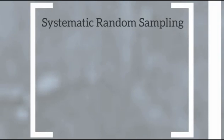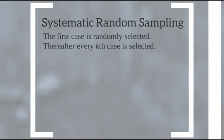Systematic random sampling is slightly different from simple random sampling. It occurs when the first case is randomly selected and then every kth case is selected afterwards, where k is a random number — it could be every 10th, 9th, or 100th case. This is useful when working with very large populations. If you randomly select the first case and randomly select the interval between cases, you should have a decent random sample of the entire population.